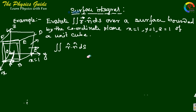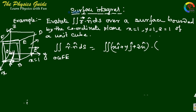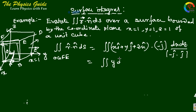Similarly, for surface OGFE, r dot n-hat ds equals the integral of (x*i + y*j + z*k) dot (-j-cap). The normal direction is along the minus y-axis, and the plane is the x-z plane, giving dx dz. This gives the integral of y dx dz, which equals 0 since y equals 0 for all points over this surface.